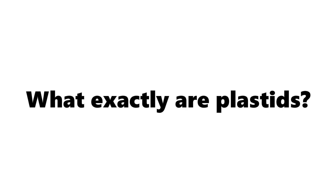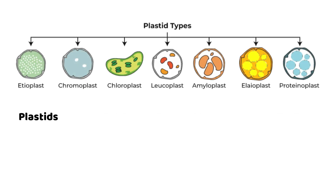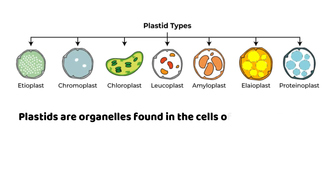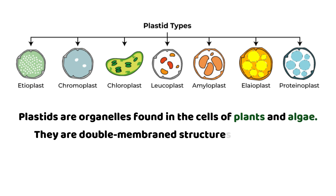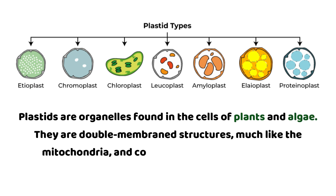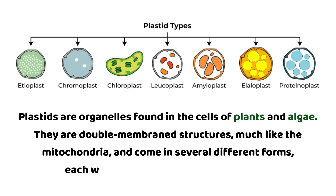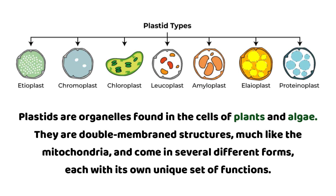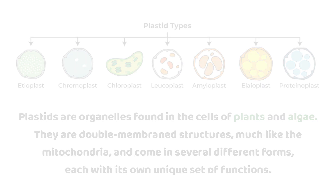What exactly are Plastids? Plastids are organelles found in the cells of plants and algae. They are double-membrane structures, much like the mitochondria, and come in several different forms, each with its own unique set of functions. Let's take a closer look at their structure.